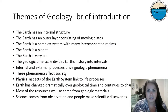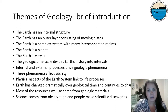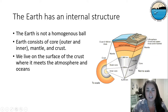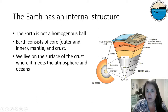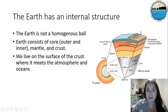We'll be going over a long list of themes throughout the semester, and I'll do a brief introduction of each individually. The first is that the Earth has an internal structure. The Earth is not a homogeneous ball but instead has layers: the inner core, the outer core, the mantle, asthenosphere, lithosphere, and the crust. On top of the crust, where we live, is where the crust meets the atmosphere and the oceans.